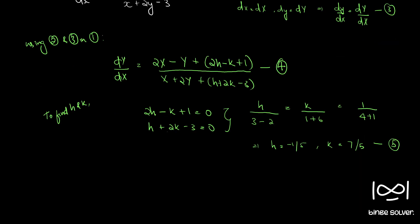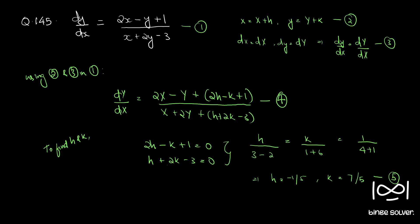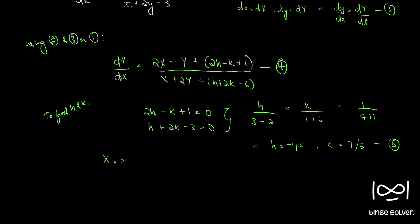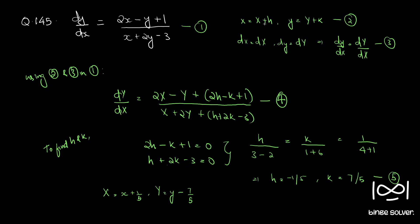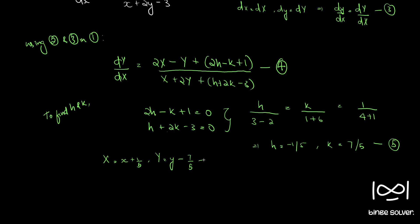Now we have our h and k values. From Equation 2 we can write capital X equals small x minus 1/5 and capital Y equals small y minus 7/5. Let's call this Equation 6. We will be using Equation 6 later in the solution.